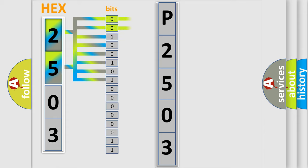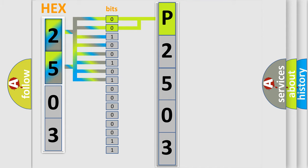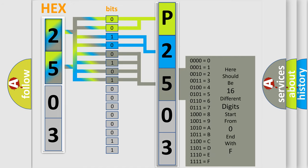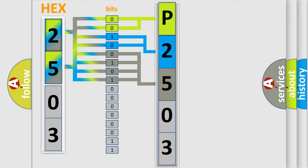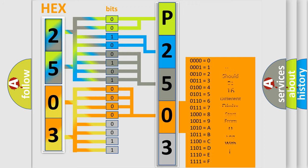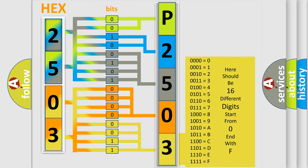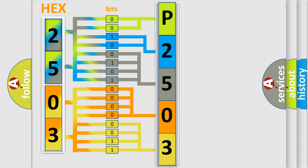By combining the first two bits, the basic character of the error code is expressed. The next two bits determine the second character. The last bits of the first byte define the third character of the code. The second byte is composed of a combination of eight bits — the first four bits determine the fourth character, and the last four bits define the fifth character. A single byte conceals 256 possible combinations.